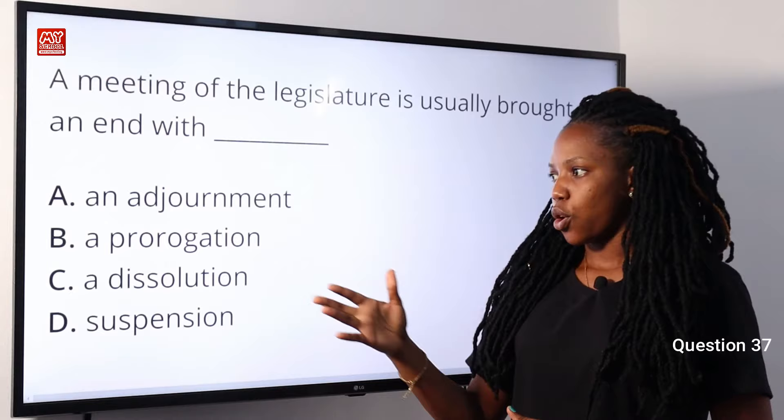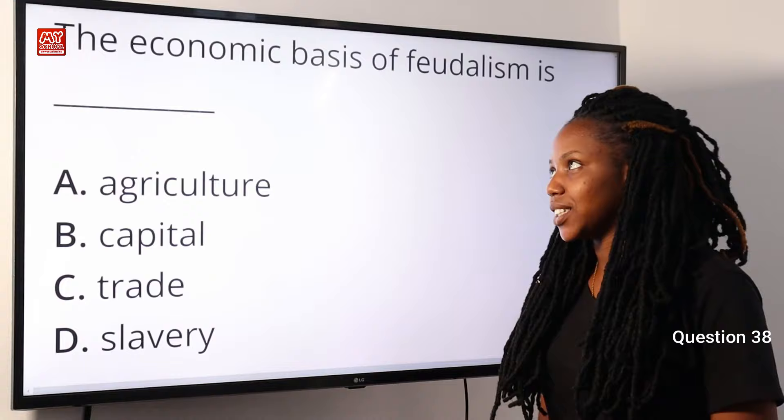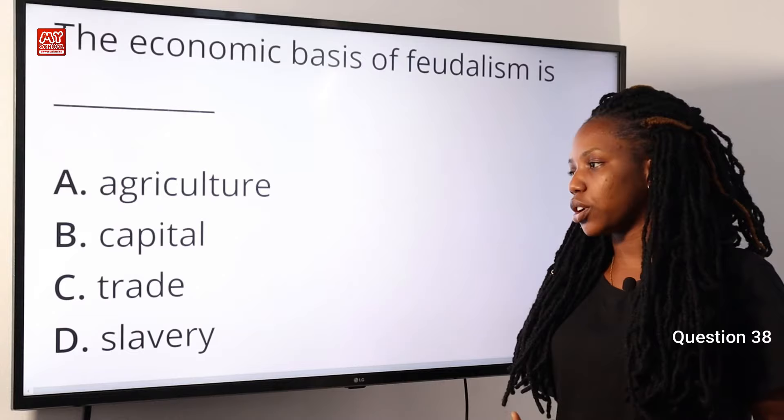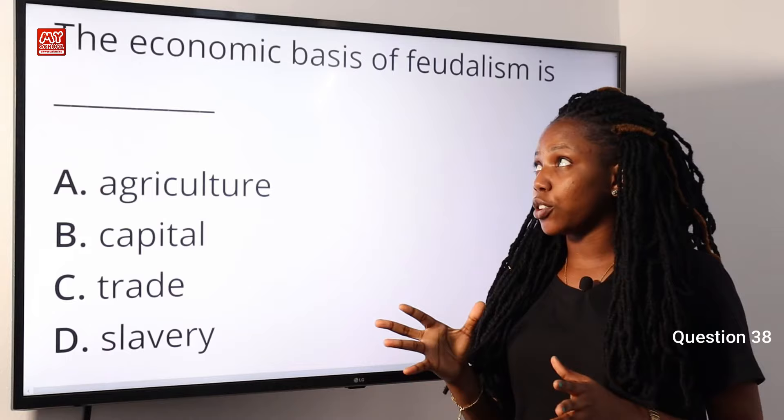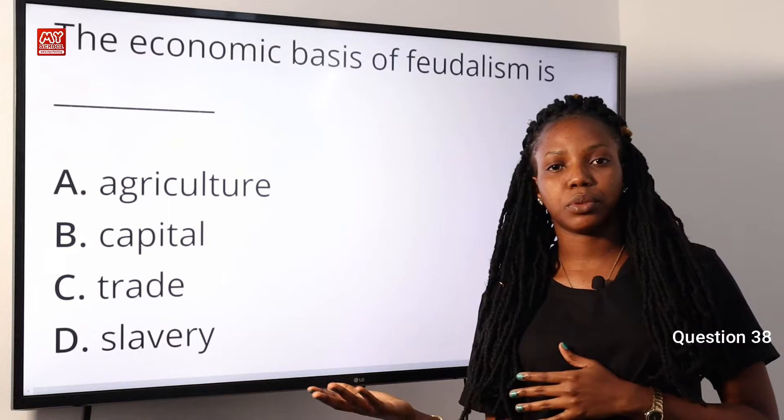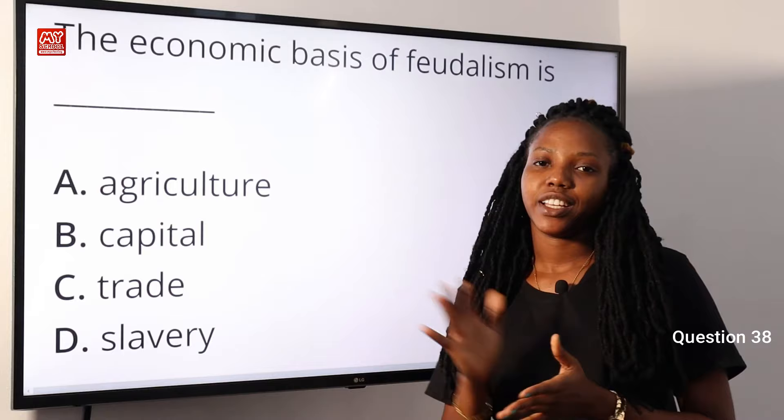Question 38. The economic basis of feudalism is dash. A, agriculture. B, capital. C, trade. D, slavery. Feudalism is a system of government based on land ownership. When we talk about the economic basis of feudalism, which is associated with land, we think of agriculture over the other options. Option A is the correct answer.